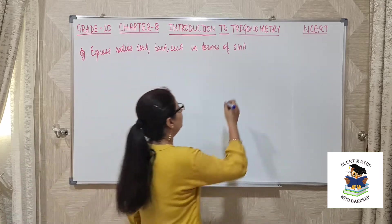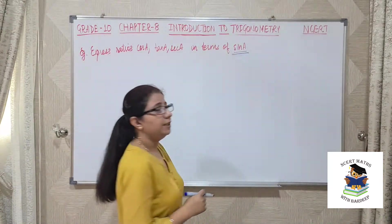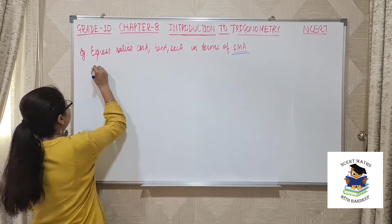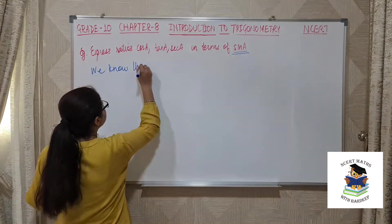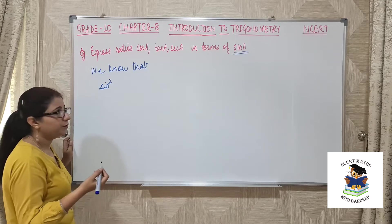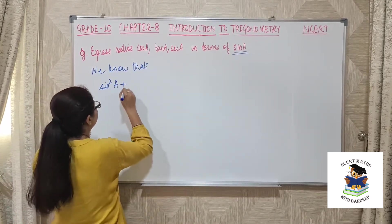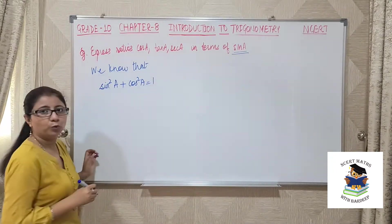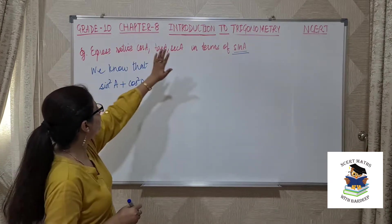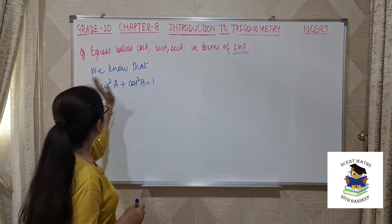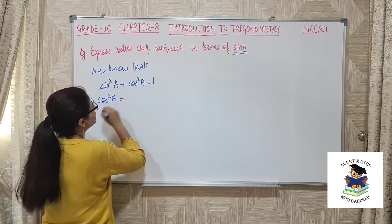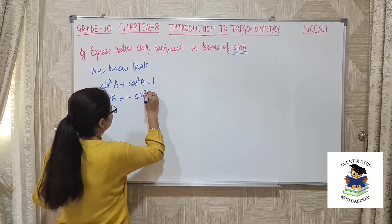When asked to find all trigonometric ratios in terms of one given ratio, we look for the identity involving that ratio. Here it is sin A, so we use: sin²A + cos²A = 1. Out of the three required ratios — cos A, tan A, sec A — cos A already appears in this identity. Shifting sin²A to the other side gives cos²A = 1 − sin²A.